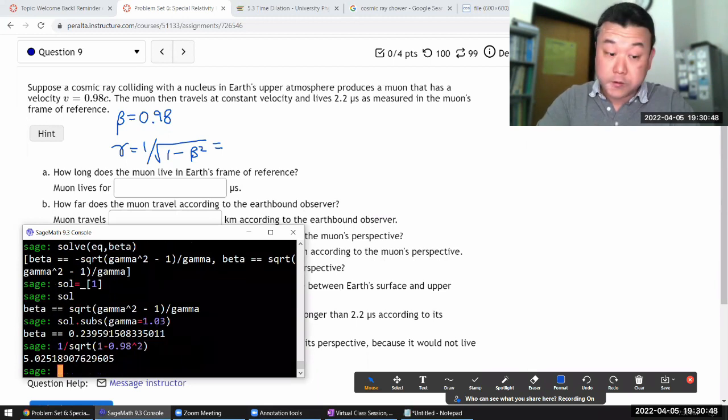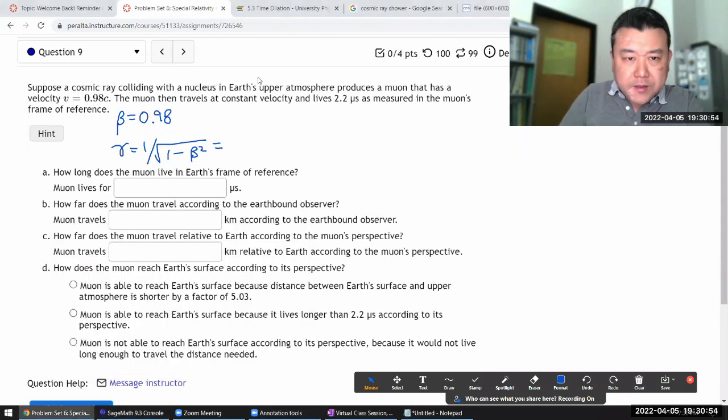so let me just work it out numerically and just have it available. So 1 over square root of 1 minus 0.98 squared. 5.025. I'm just keeping one extra significant figure, just in case. 5.025.